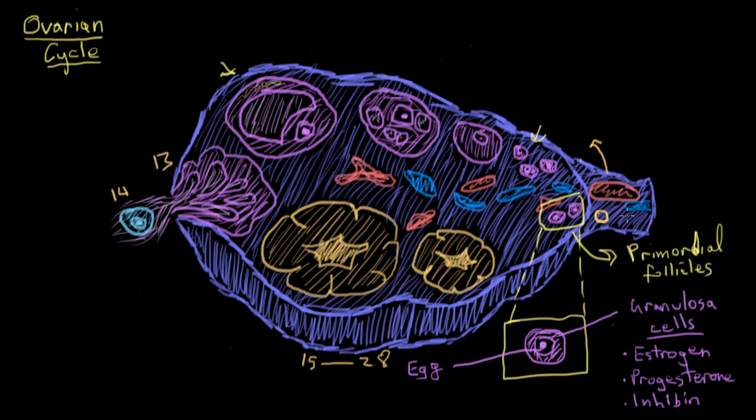But first we'll jump back to these. We know these are primordial follicles here. The next stage of development are these guys here, and these are called primary follicles. And in the primary follicles, the layers of granulosa cells and the oocyte, the egg, start to be separated by this other layer that starts to form between them. That's called the zona pellucida.